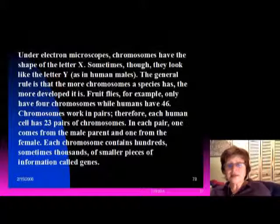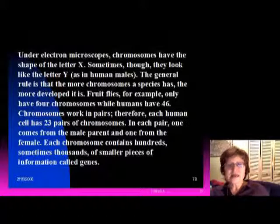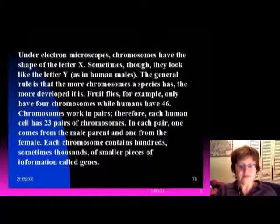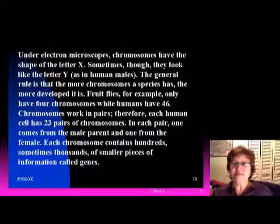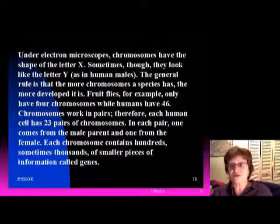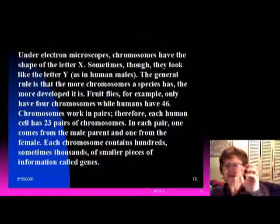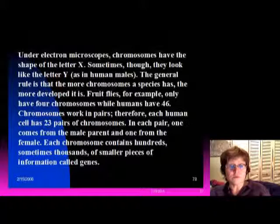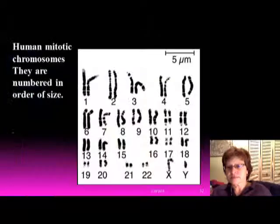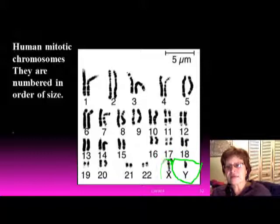The general rule is that the more chromosomes a species has, the more complicated or developed it is. Fruit flies only have four chromosomes, but humans have 46. Every single species has a certain number of chromosomes that will not change. Chromosomes usually work in pairs, so each human cell has 23 pairs of chromosomes totaling 46 — one from the male parent and one from the female. That is what makes differences among humans, since no two individuals have exactly the same chromosomes. Each chromosome contains hundreds, sometimes thousands, of genes. This picture shows the 23 pairs of chromosomes, including the Y male chromosome and the X female chromosome.